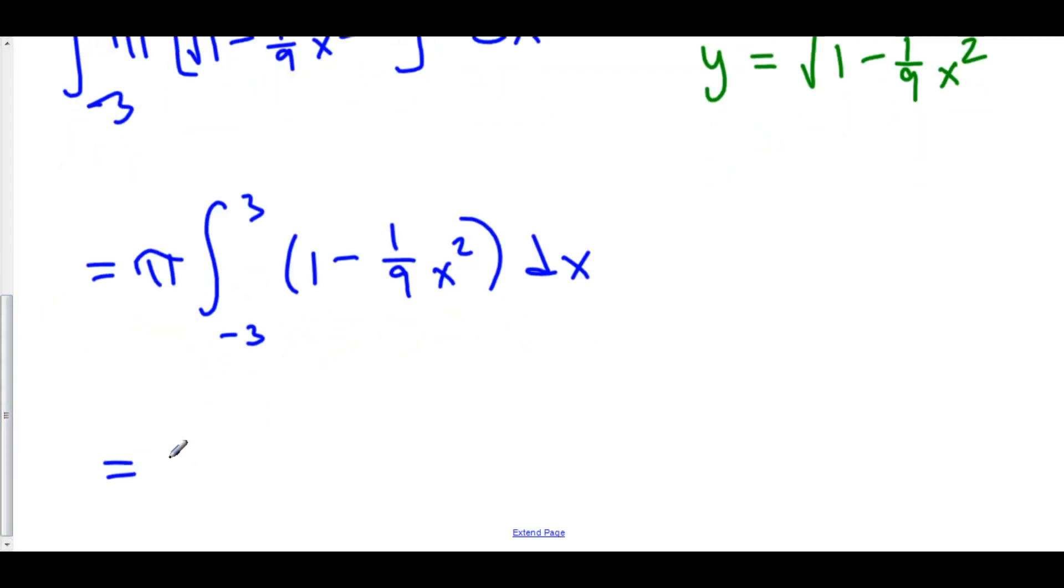Let's integrate. We have pi times the antiderivative of 1 is x minus the antiderivative of 1 over 9 x squared is 1 over 27 x cubed. This is from negative 3 to positive 3.